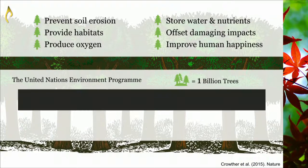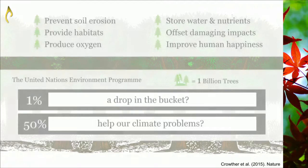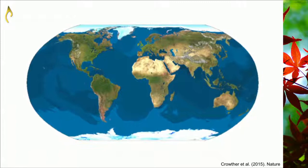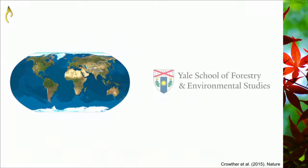Would planting a billion trees increase the total count by 1% or 50%? Could a billion trees help our climate problems, or would it just be a drop in the bucket? Our current understanding of global forest extent comes from satellite images, which provide valuable information about forest area and canopy cover but cannot tell us about everything going on below the surface. So a research team from Yale University's School of Forestry and Environmental Studies set out to map the world's trees.